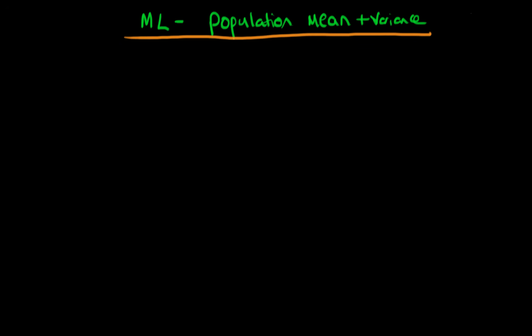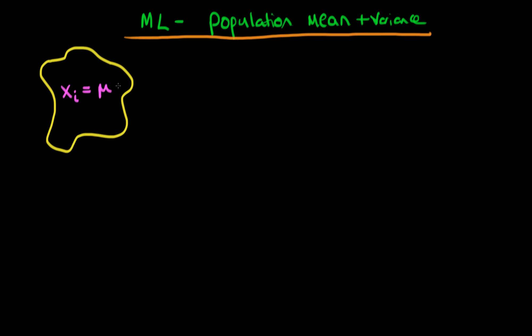In this video I want to start to derive the maximum likelihood estimators for the population mean and population variance. We have some population process which generates xᵢ, where xᵢ equals the population mean μ plus some error εᵢ. Here εᵢ is defined in the population as normally distributed with a mean of zero and a variance of σ².